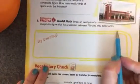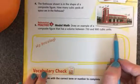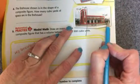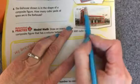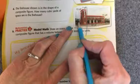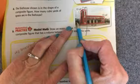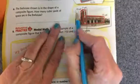Number four. The firehouse shown is the shape of a composite figure. How many cubic yards of space are in the firehouse? I'm going to split this firehouse so I have this piece that's tall and this piece that's long. So here I have my three numbers: 7, 15, and 20 that I need to multiply together. You can use your calculator to do that, and I'll have one number.